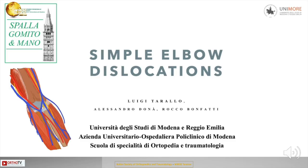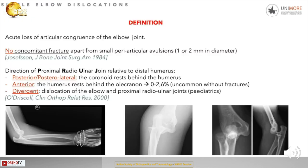The topic of this presentation is simple elbow dislocation. Simple elbow dislocation is an acute loss of articular congruence of the elbow joint with no concomitant fractures, apart from small periarticular avulsions of one or two millimeters in diameter.